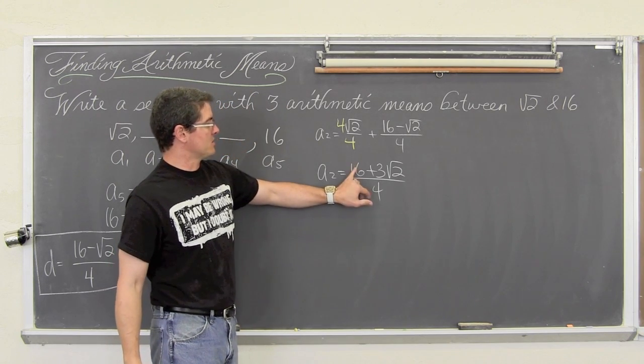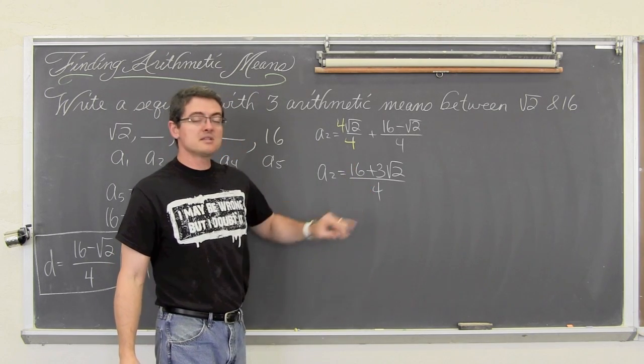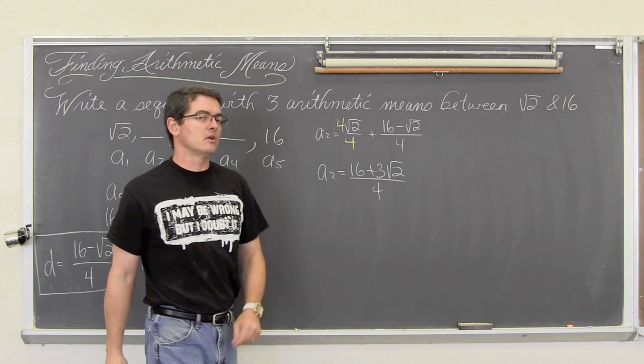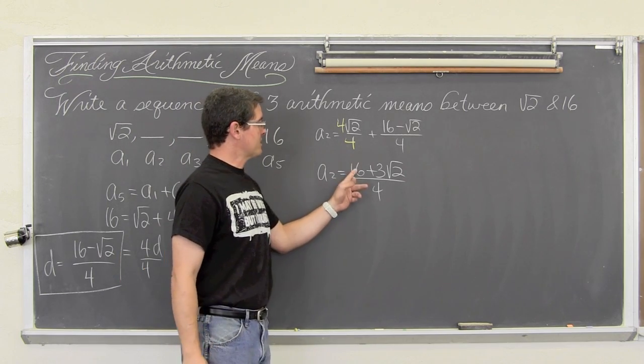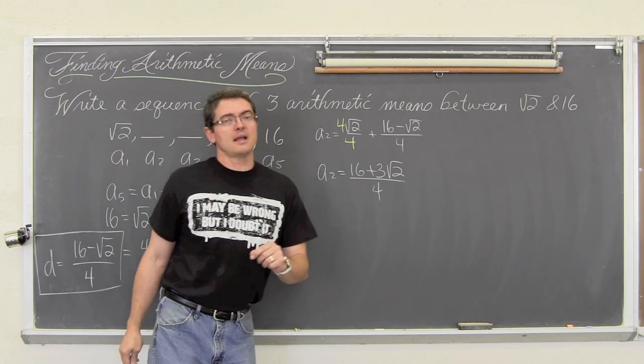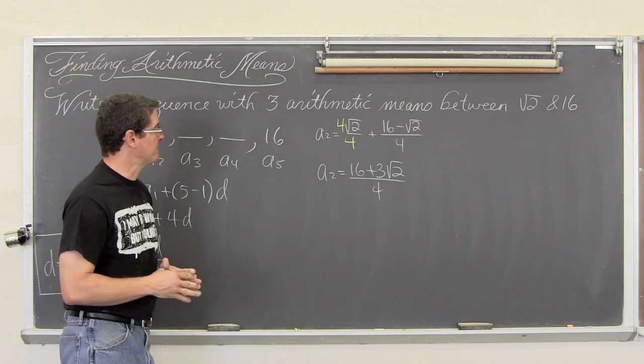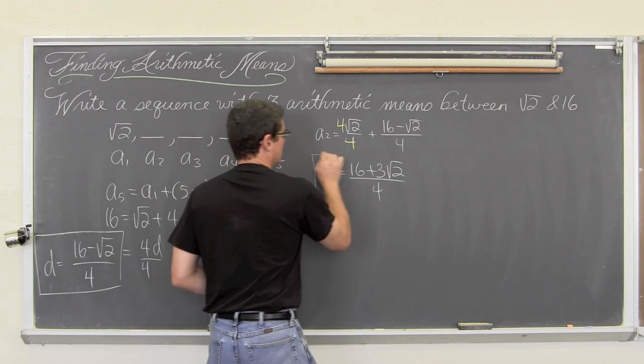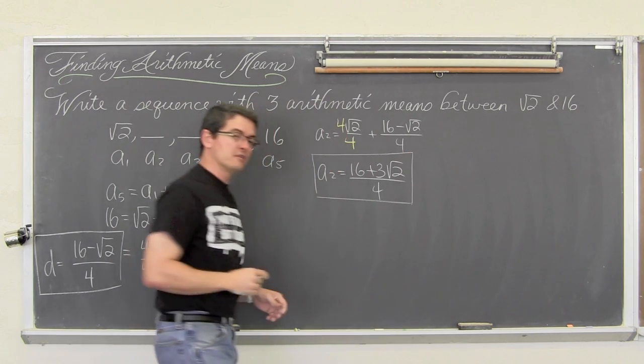Now don't be tempted to cancel 16 with the 4. You cannot cancel terms, you can only cancel out factors. So the 16 and the 4 do not cancel out. If you have done that, you made a mistake. So this is the first arithmetic mean we were looking for.